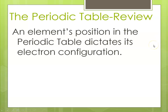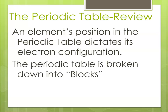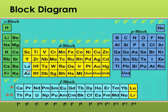Remember that an element's position in the periodic table is dictated by its electron configuration, and the periodic table is broken down into blocks according to sublevels. There's an S block where the S sublevel is filling, and then there's the P block where the P sublevel is filling. The transition elements are the D block, and the inner transitions represent the F block.